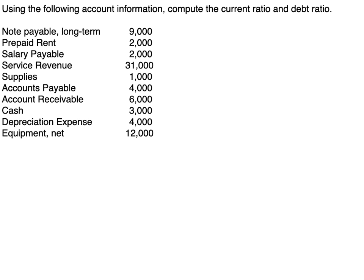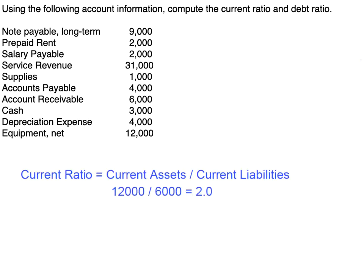Our current ratio is current assets divided by current liabilities. Looking down the list for current assets: prepaid rent is $2,000; supplies is $1,000, so we're up to $3,000; accounts receivable is $6,000, so now $9,000; and cash is $3,000, giving us total current assets of $12,000. For current liabilities: salary payable is $2,000 and accounts payable is $4,000, totaling $6,000 in current liabilities. So we have $12,000 divided by $6,000, giving us a current ratio of 2.0.